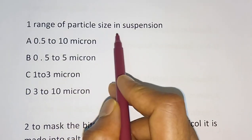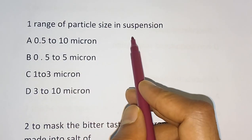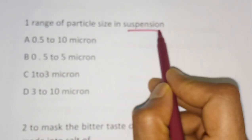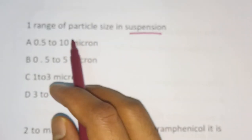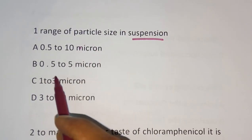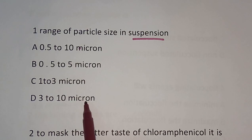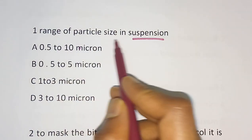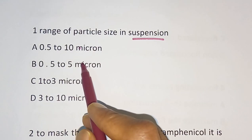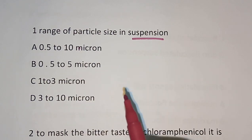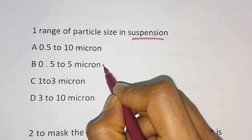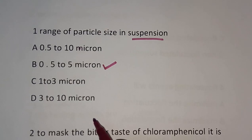Question 1: The range of particle size in suspension is. Options are: A) 0.5 to 10 micron, B) 0.5 to 5 micron, C) 1 to 3 micron, D) 3 to 10 micron. The correct answer for this question is Option B: 0.5 to 5 micron.